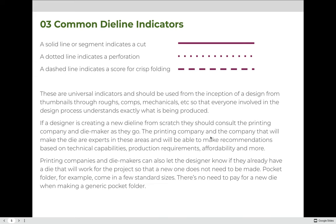When you create a die line, it is important to use common indicators so that whoever you give your file to understands what you're trying to communicate. A solid line indicates a cut — cutting straight through the paper. A dotted line indicates perforation — puncturing without cutting all the way through so it's easy to tear. Dashed lines indicate folds or scoring lines, indicating where you want to fold easily to create your package. These are universal indicators and should be used from thumbnails, roughs, comps, and mechanicals through any stage of the process.